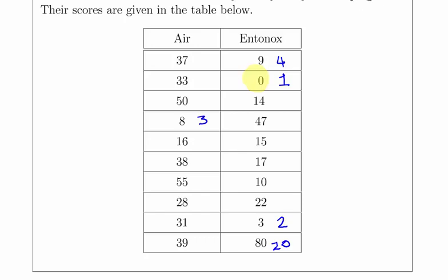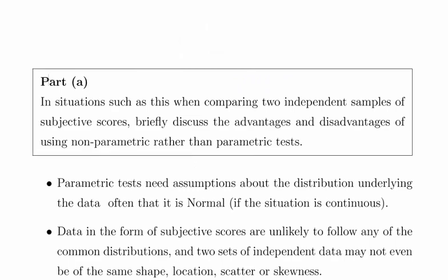In situations such as these, when comparing two independent samples of subjective scores, briefly discuss the advantages and disadvantages of using non-parametric rather than parametric tests. These are subjective scores. This sort of thing comes up quite a lot in life sciences and medicine and clinical studies and psychology. These non-parametric tests deal with a lot of data that is hard to model.